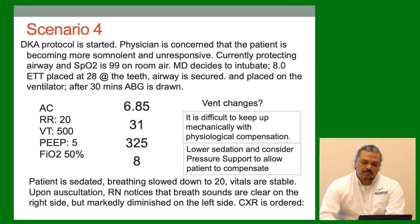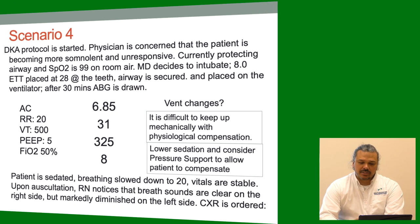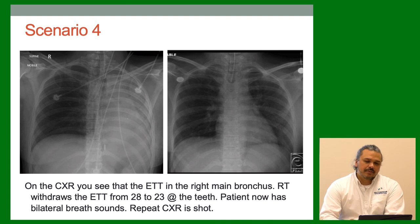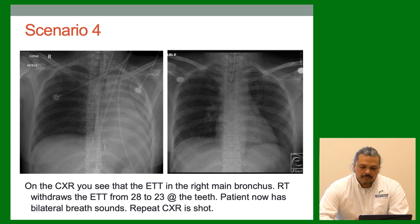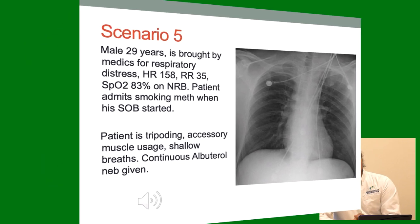The nurse notices breath sounds are clearer on the right side but really diminished on the left. We check an x-ray and notice we only have one lung — left side is whited out and the right side is completely aerated. ET tube is in the right main bronchus. RT withdraws the ET tube from 28 to 23 at the teeth. Patient now has bilateral breath sounds. Repeat x-ray shows a good bilateral x-ray.